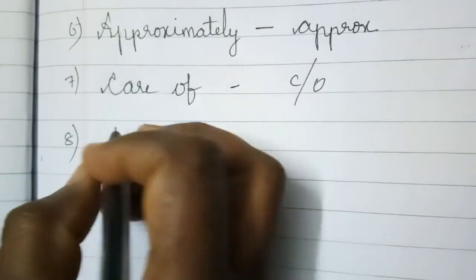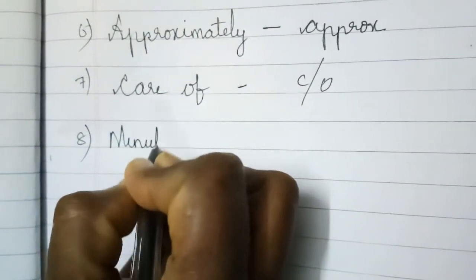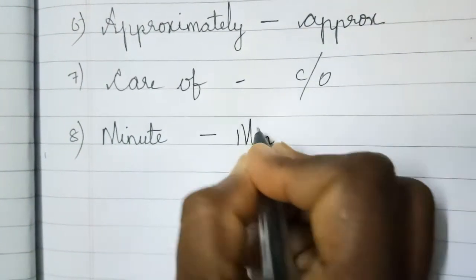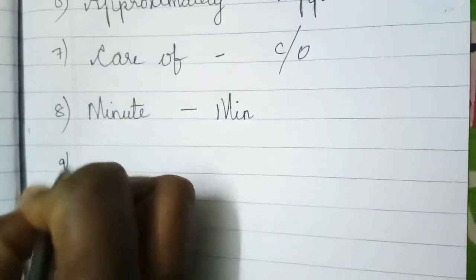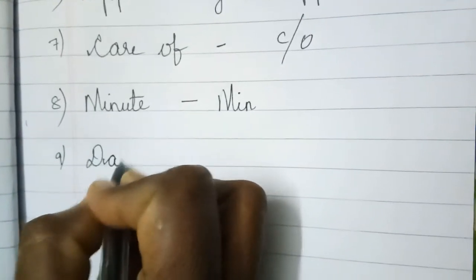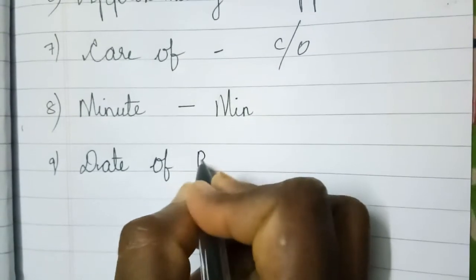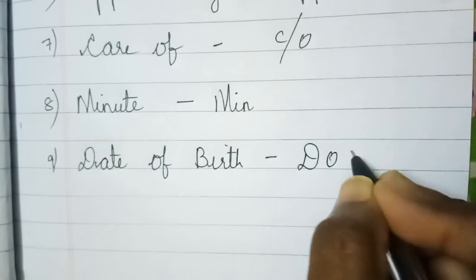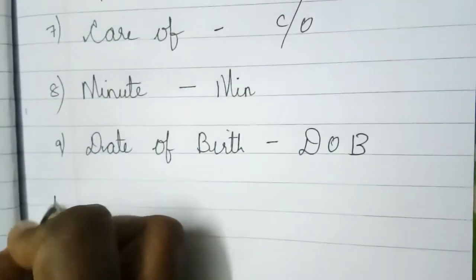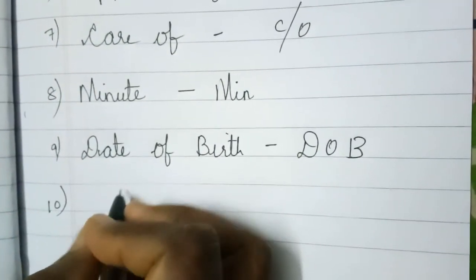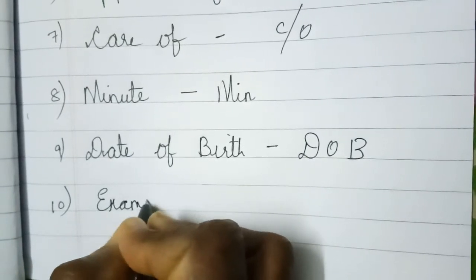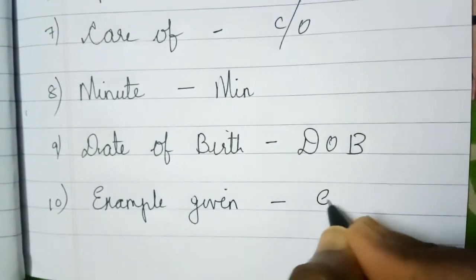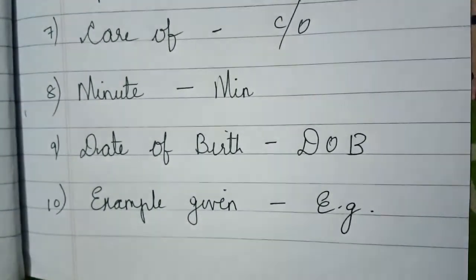Coming to eighth one, Minute, M-I-N-U-T-E. You can write M-I-N. Ninth one, date of birth. Write D-O-B, date of birth. Tenth one, example given. So you write E.G.